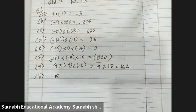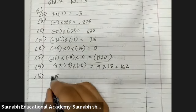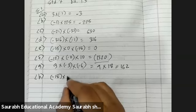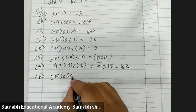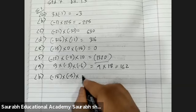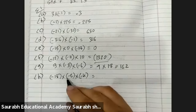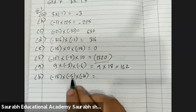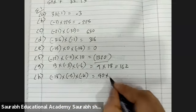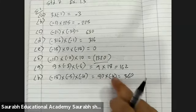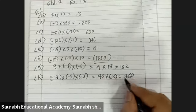H: minus 18 into minus 5 into minus 4. 18 fives are 90, and into minus 4 — 9 fours are 36, so 360. The sign is minus, giving minus 360. One number is negative.